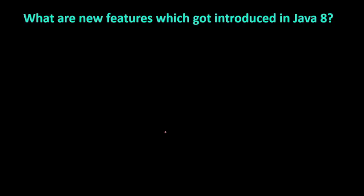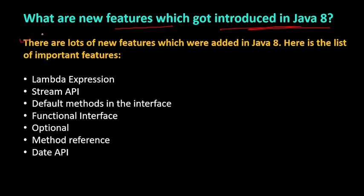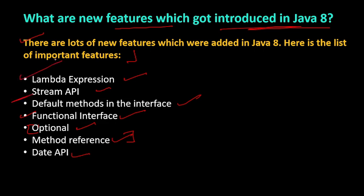From here, theoretical questions begin. What are the new features introduced in Java 8? There are many features, but the most important ones you encounter in daily work are: lambda expressions, Stream API, default methods, functional interfaces, Optional, method references, and the new Date API. We have been covering lambda expressions and Stream API throughout this video.